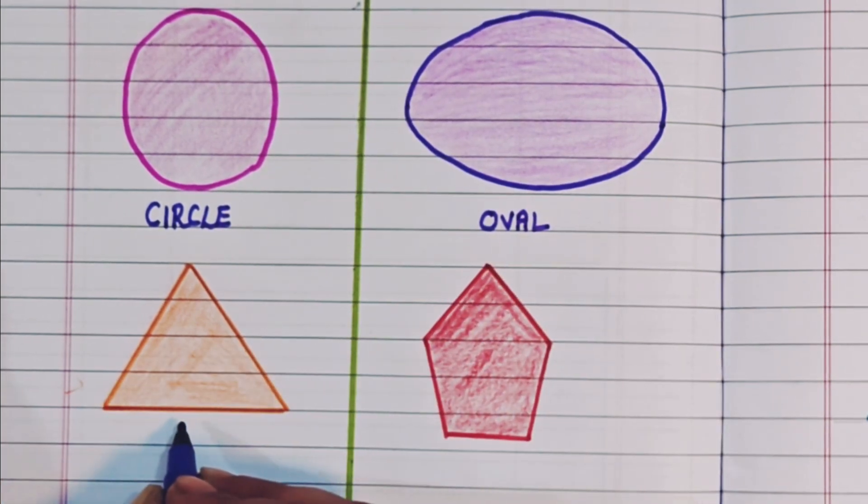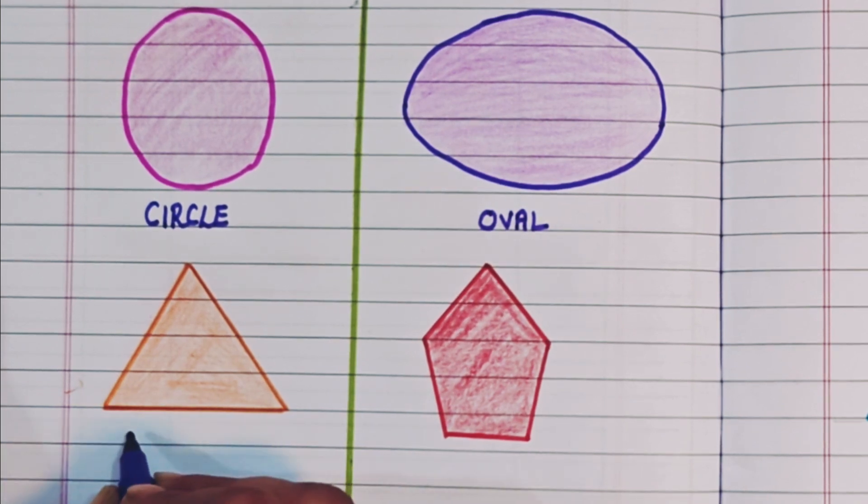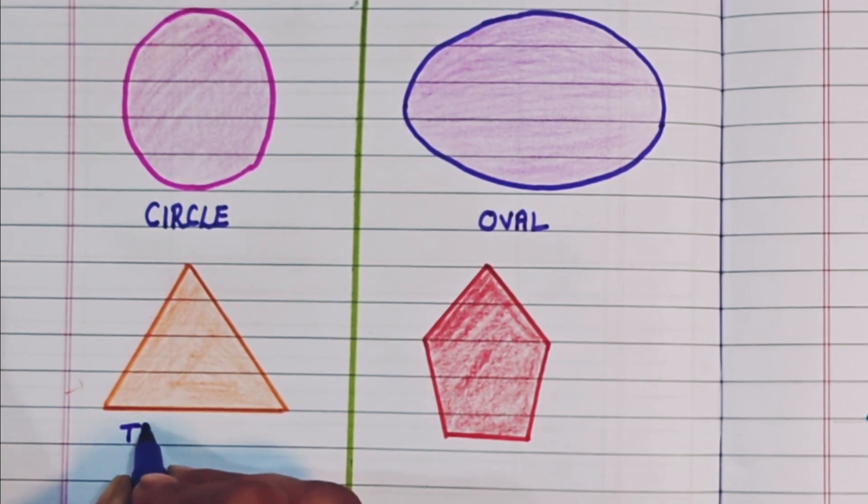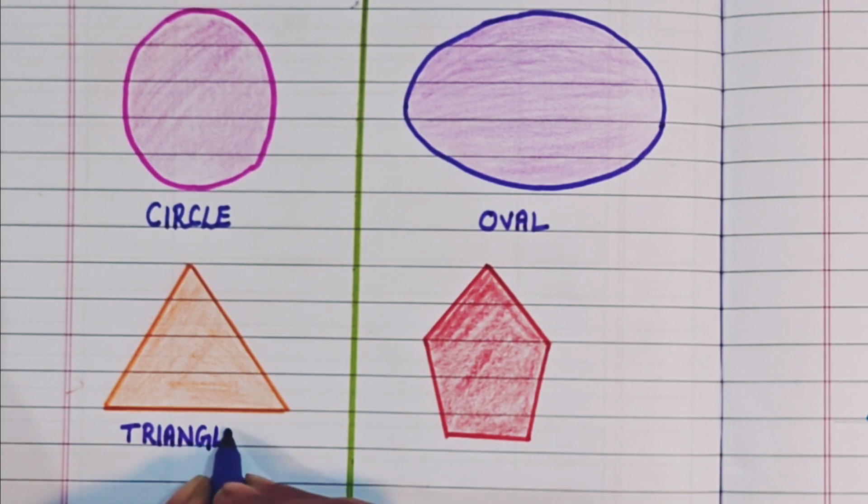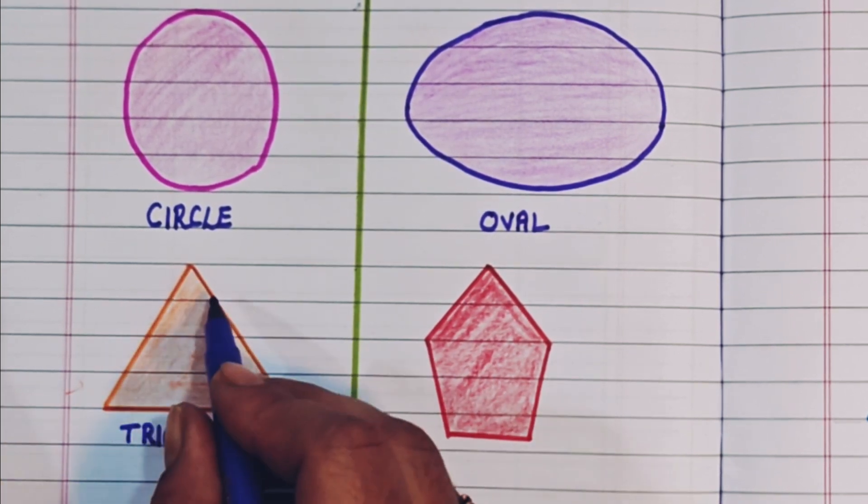This is a triangle. It has 3 sides. Triangle. T-R-I-A-N-G-L-E. Triangle, because it has 3 sides.